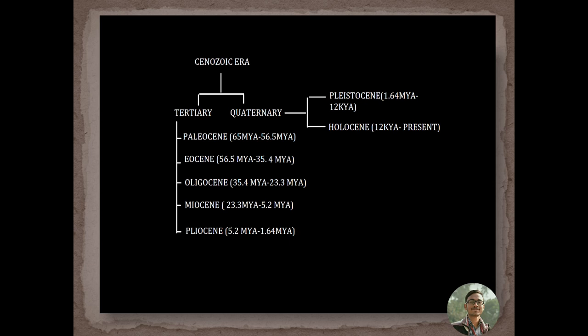The most important era is the Cenozoic era, which is further divided into two periods: first is the Tertiary, second is the Quaternary. The Tertiary period is further divided into five epochs: Paleocene, Eocene, Oligocene, Miocene, and Pliocene. The Tertiary period ended with the Pliocene approximately 1.64 million years ago. The Quaternary period is further divided into two geological epochs: first is the Pleistocene, then the Holocene.